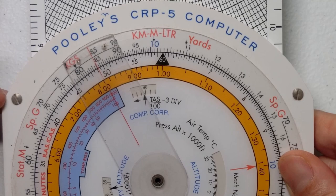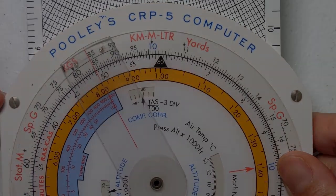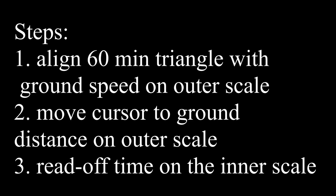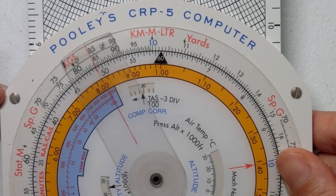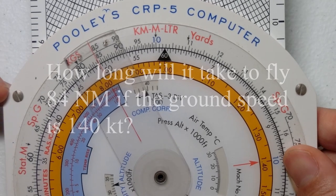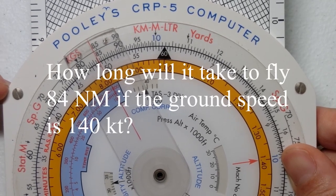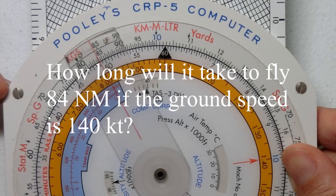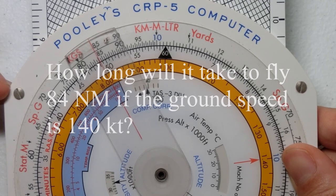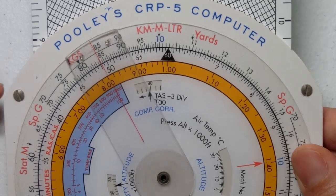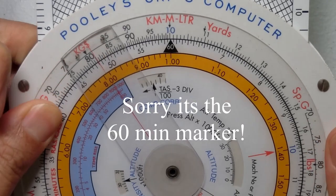Let's demonstrate this with an example. In our example we'll answer the question: how long will it take to fly 84 nautical miles if the ground speed is 140 knots? So step one is we're going to take our cursor and put it over the outer scale.